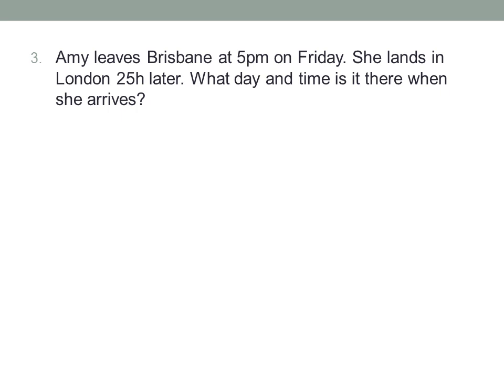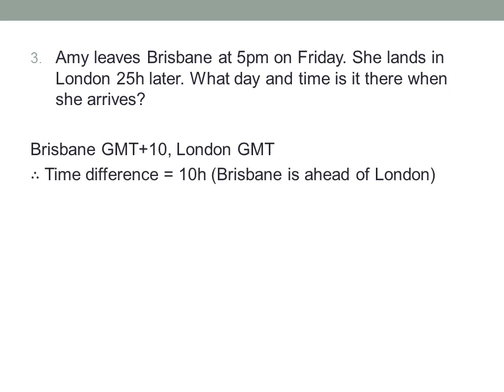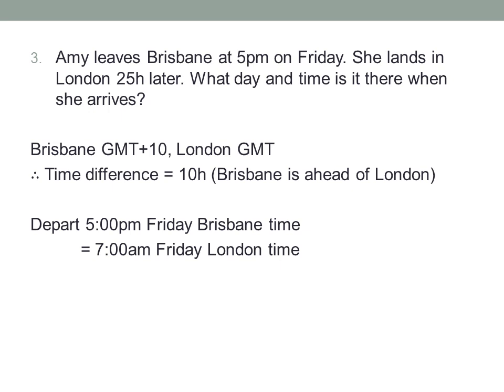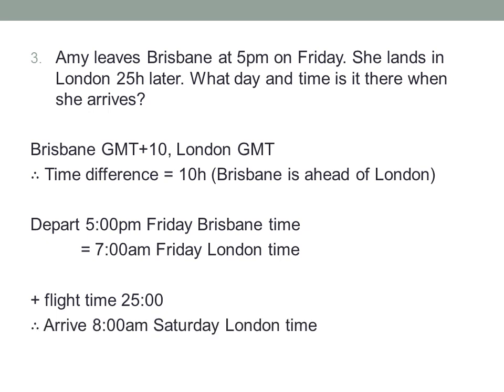Let's try a simple problem first that doesn't involve crossing the date line. Amy leaves Brisbane at 5pm on Friday. She lands in London 25 hours later, after a stopover somewhere in Asia or the Middle East. What day and time is it in London when she arrives? Well, Brisbane is at GMT plus 10, and London is at GMT, so Brisbane is 10 hours ahead of London. Let's work in the destination time zone again. Amy leaves at 5pm on Friday, Brisbane time. 10 hours before that is 7am on Friday, London time. Amy's flight lasts 25 hours. Add 25 hours to 7am, and it'll be 8am on Saturday in London when she arrives.